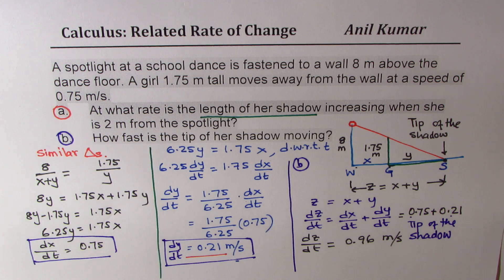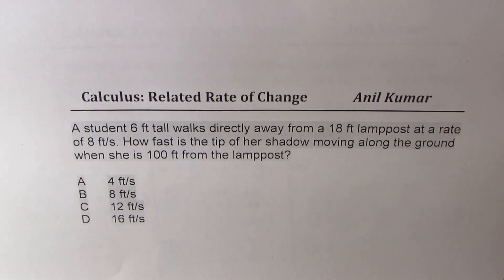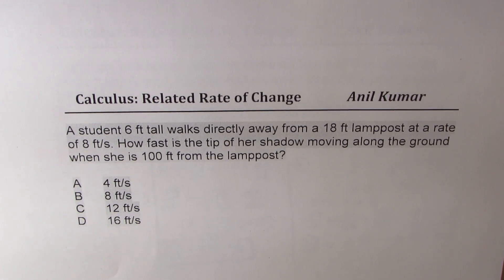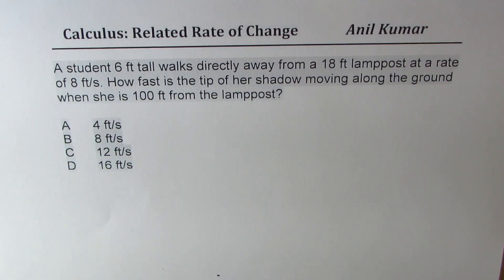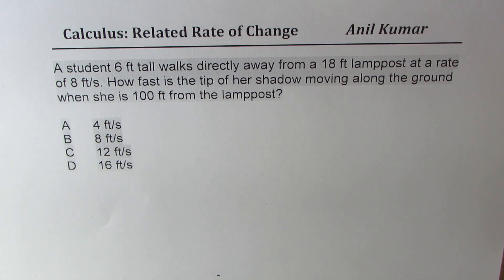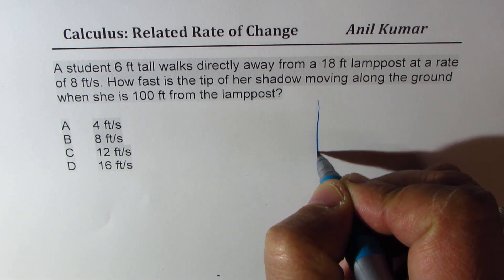We'll take up a multiple choice based on this question as your test example. Here is the question: a student 6 feet tall walks directly away from an 18-foot lamppost at a rate of 8 feet per second. How fast is the tip of her shadow moving along the ground when she is 100 feet from the lamppost?